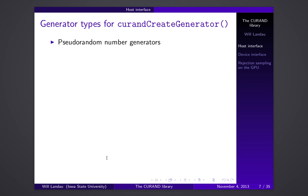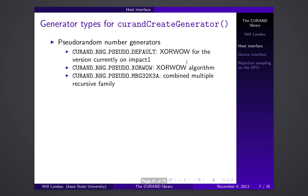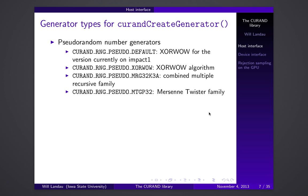You have different number generator types. Depending on the algorithm you want to use, you pass different macros to curandCreateGenerator. Your options include XORWOW as the default, the multiple recursive family, and the Mersenne Twister. The Mersenne Twister is currently the gold standard for pseudorandom number generation in languages like R. It's an excellent pseudorandom number generator, and I recommend it given most sets of choices.